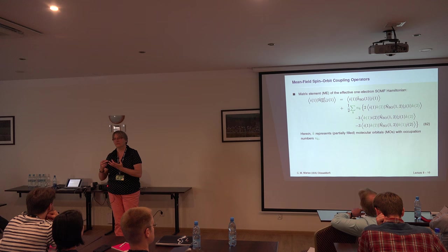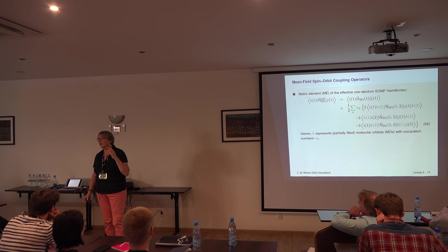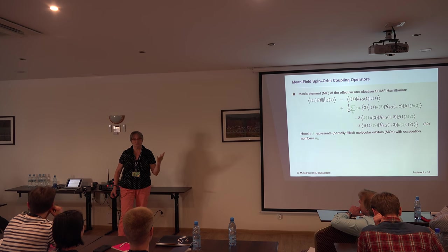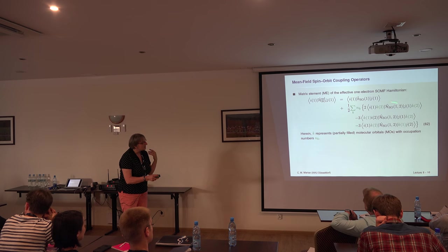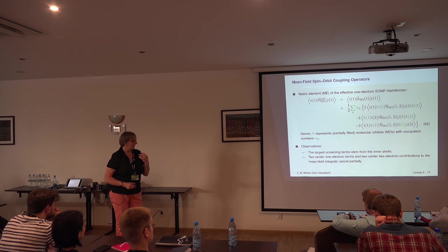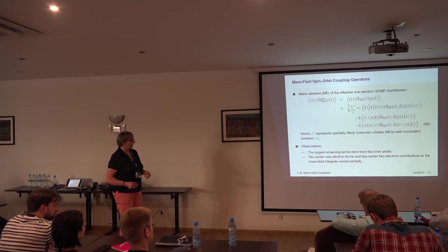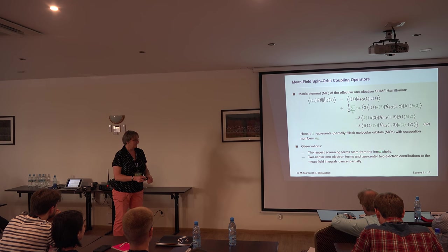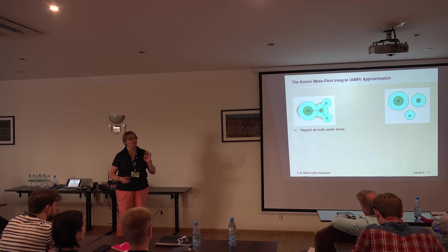Nevertheless, two-electron integrals are expensive. The spin-orbit operator has three components, and particle symmetry is not obeyed, so you have six times as many integrals as for electron repulsion — you do not want to calculate all these integrals. The largest screening terms stem from the inner shells, and the two-electron one-center and two-center terms tend to cancel each other. So in a good approximation you can neglect all the two-center terms.